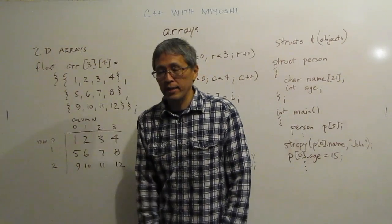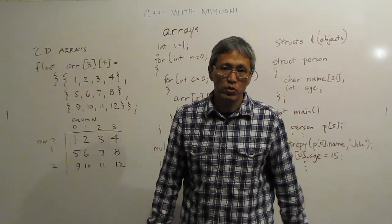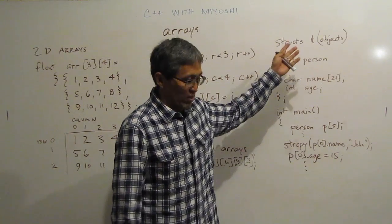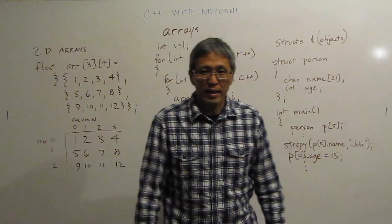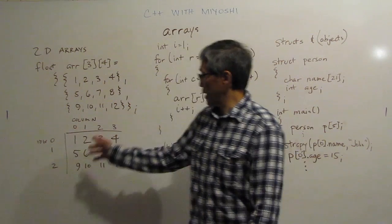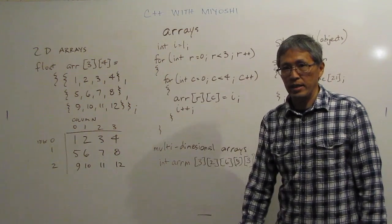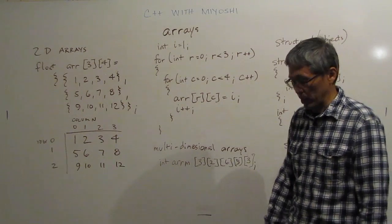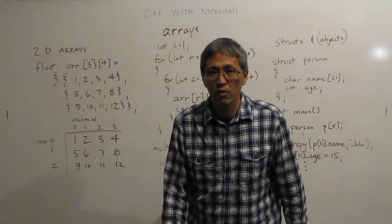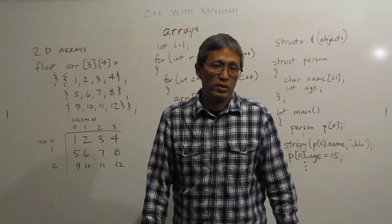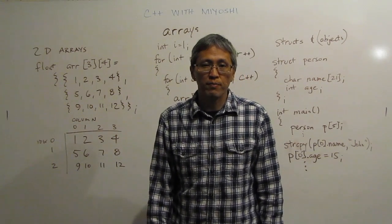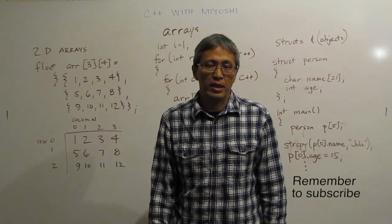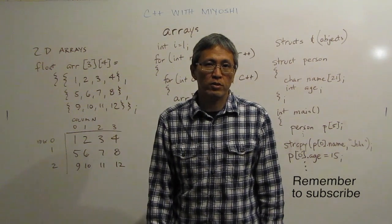So, multidimensional arrays, especially 2D arrays, very nice and easy to use in C++. And you can use them again with structures, and use nested loops to your best advantage, especially when initializing them, or if you're going to print them out as well. Just use them to your best advantage. So, 2D arrays, multidimensional arrays, use them to your best advantage in C++, and thanks for tuning in. I hope to see you next time for more C++ with Miyoshi.